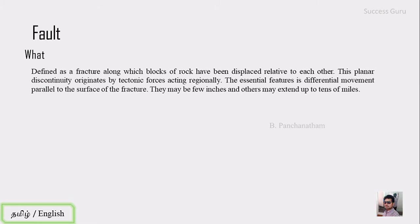So what is a fault? A fault is defined as a fracture along which the blocks of rock have been displaced relative to each other. Remember, this is a planar discontinuity created by tectonic forces acting regionally. The essential feature is differential movement parallel to the surface of the fracture. If there is no parallel movement, it is not a fault — it is called a joint. This is the difference between joints and faults.